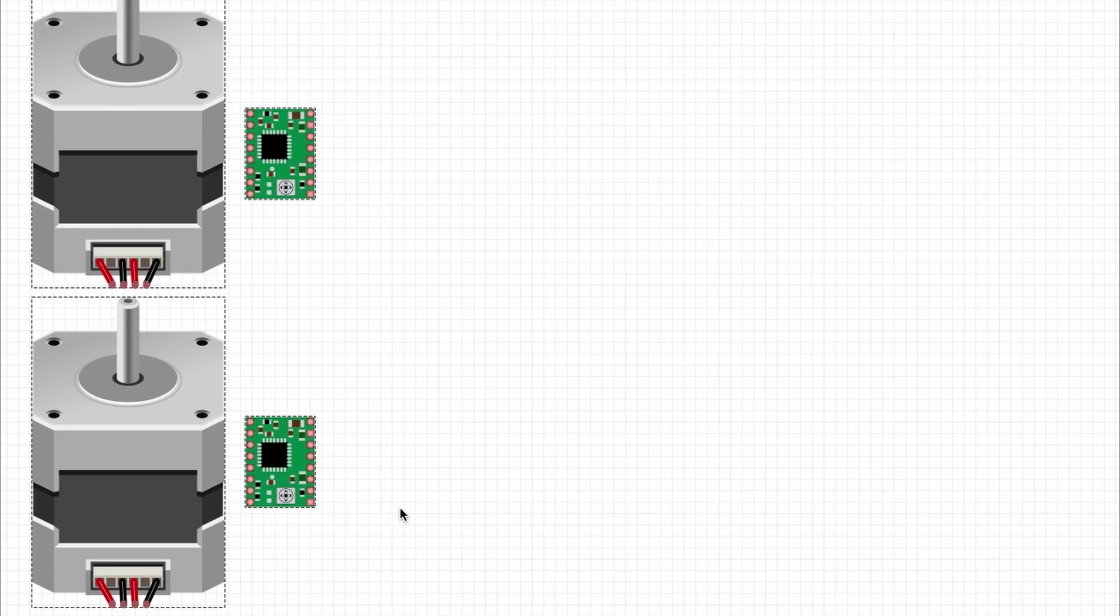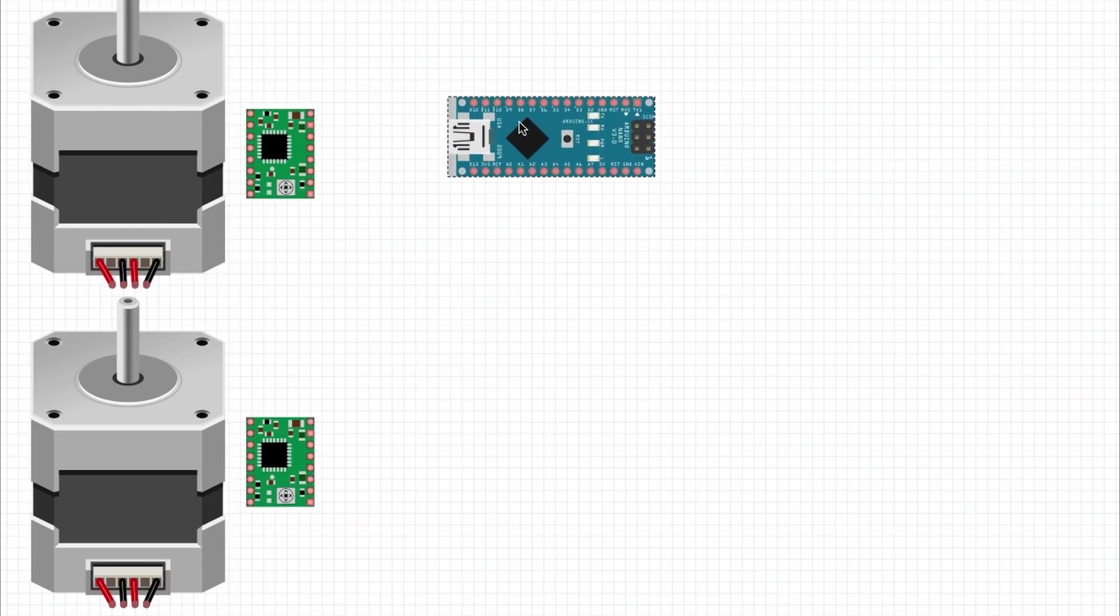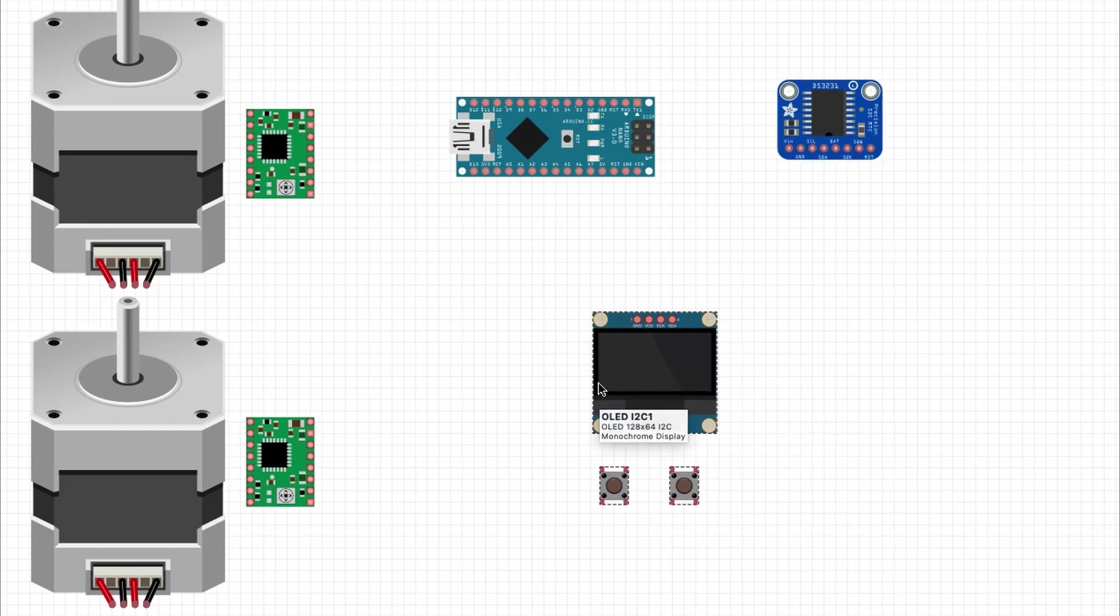The electronics mainly consists of two stepper motors and their corresponding drivers, a microcontroller, in this case an Arduino Nano which acts as the brain of the whole setup, a real-time clock which accurately tracks the time and a display with two buttons enabling me to set the time. Initially I manually set the time in the code but later I added the display for easier time adjustment.